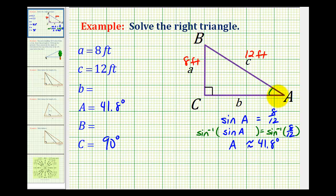Well, the two acute angles of any right triangle are complementary or have a sum of 90 degrees. So 90 degrees minus 41.8 degrees will give us the measure of angle B, and that would be 48.2 degrees.